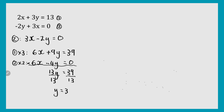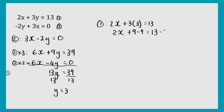Now, as I said before, you can substitute y equals 3 into any of your equations and you will get the same answer. Let's substitute it into the first one: 2x plus 3 times 3 equals 13, so 2x plus 9 equals 13. To get 2x on its own, subtract 9 from both sides: 2x equals 4. Divide by 2 and you get x equals 2. You can go back and substitute y equals 3 and x equals 2 into either equation to verify the correct answer.